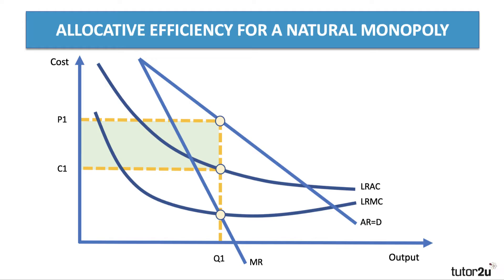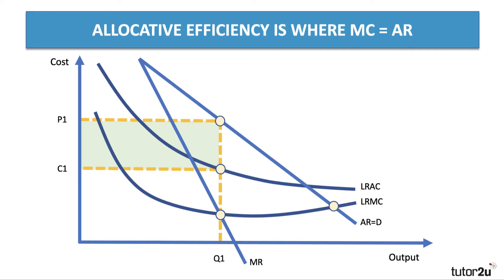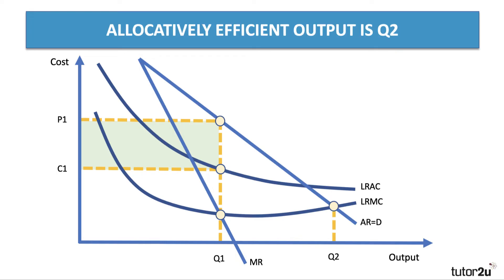In theory, a state-owned natural monopoly could be forced to price lower. The government might insist on cutting water bills, holding down train fares, and pricing closer to marginal cost to achieve allocative efficiency. That would be good news for consumers — lower prices means more output and more consumer surplus. But with this diagram there is a catch: if we regulate the monopoly to price where marginal cost equals average revenue, that gives output Q2 — good for consumers.